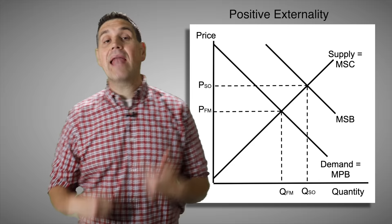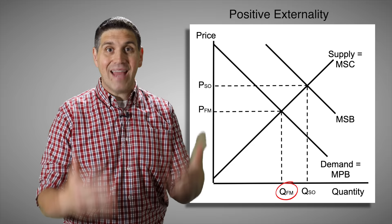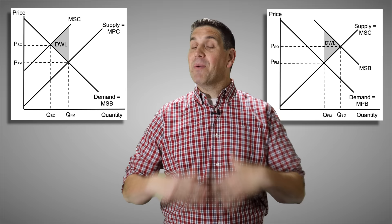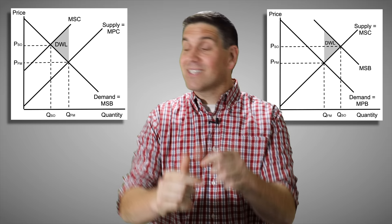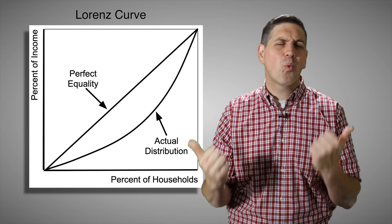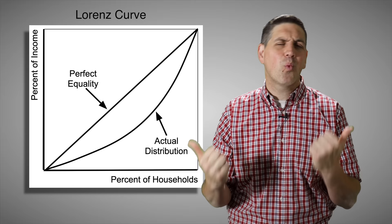The same idea applies with a positive externality. The free market produces a certain quantity, but it doesn't factor in all the additional benefits society gets from the product. That means the socially optimal quantity should be higher, and again we have deadweight loss — the free market is underproducing something society wants more of. It all comes back to the same concept of allocative efficiency. For unit six, those are the key graphs you absolutely need to know. There's also the Lorenz curve that you might see on multiple choice, but it's not something you're expected to draw.